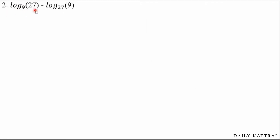Second question: log base 9 of 27 minus log base 27 of 9. In this question there are two terms. The first term is log base 9 of 27, and the second term is log base 27 of 9. Notice that the base and bracket values are interchanged — here 9 is in the bracket, and there 27 is the base in the bracket.